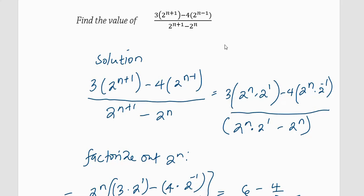They want the solution of this, and to get the solution we only need to simplify this expression. So let us look at the solution. We have 3 × 2^(n+1) minus 4 × 2^(n-1), all divided by 2^(n+1) minus 2^n.